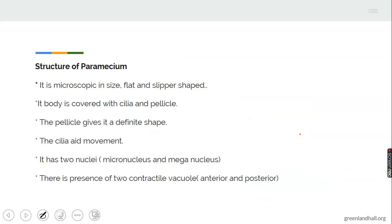Structure of paramecium. Paramecium is microscopic in size, flat and slipper shape. It looks like the shape of your slipper. Its body is covered with cilia for movement and the pellicle. The pellicle gives a definite shape. It has two nuclei, the micronucleus and the mega nucleus. There is also presence of two contractile vacuoles, one in front anterior and the other one posterior.